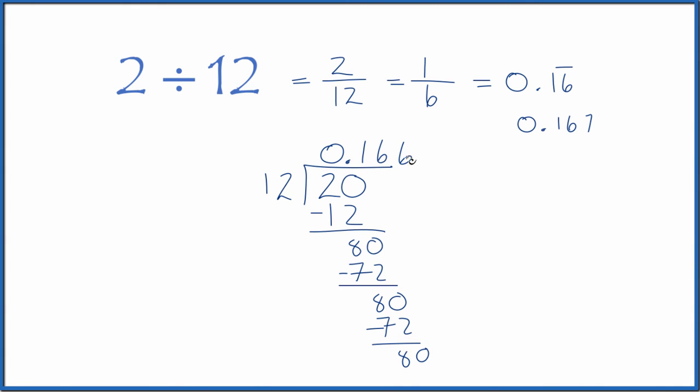0.166666, and so on. So 2 divided by 12 is equal to the fraction 2 twelfths, or 1 sixth, and the decimal 0.16 with the sixes repeating. Sometimes you will see this rounded to 0.167.